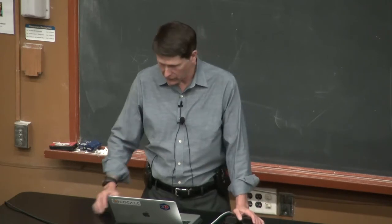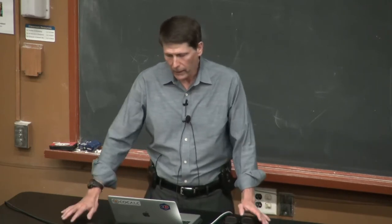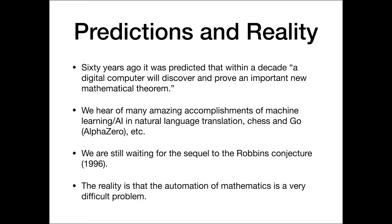So a few words about predictions and reality, 60 years ago, in the early days of artificial intelligence, it was predicted that within a decade, a digital computer will discover and prove an important new mathematical theorem. That did not happen according to schedule. We hear of many amazing accomplishments of machine learning and AI, such as natural language translation, AlphaZero, playing games of chess and Go, and so forth.